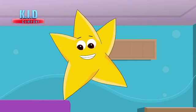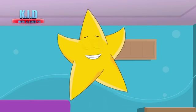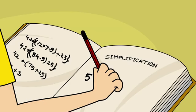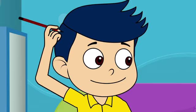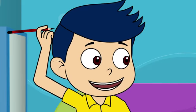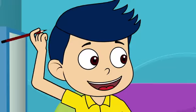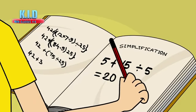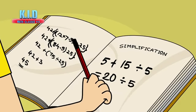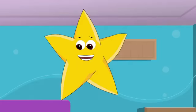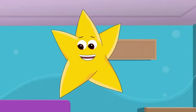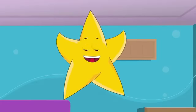Let us start with the first question. What is the solution of 5 plus 15 divided by 5? 5 plus 15 divided by 5 is equal to 20 divided by 5, which is equal to 4. No Kabir, that is incorrect.